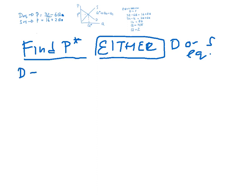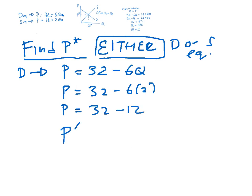So let's say we use the demand equation. Price is equal to 32 minus 6Q. Q is equal to 2. Price is equal to 32 minus 6 times 2. Price is equal to 32 minus 12. And your equilibrium price is going to be $20.